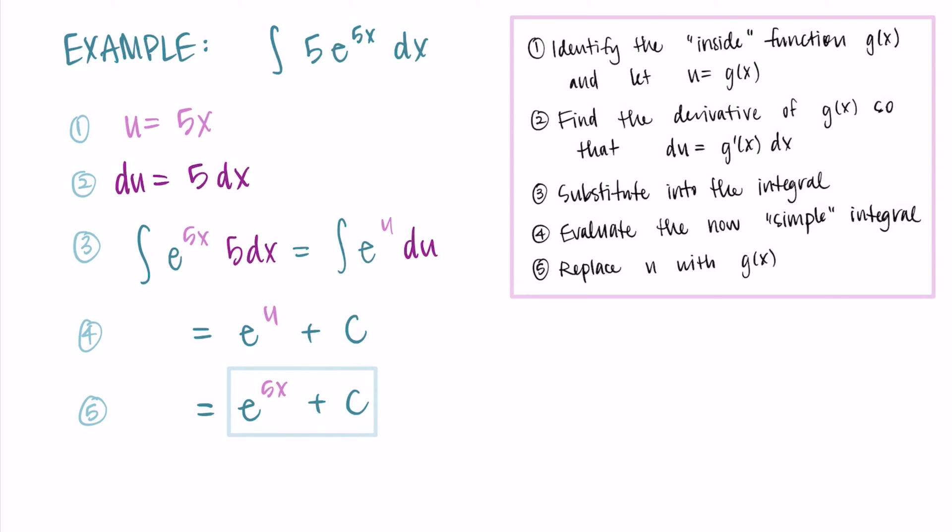Again, you can really quickly check to make sure this works as you thought it did. Take the derivative, the derivative of e^(5x) is e^(5x) times 5, and that's what we started with.